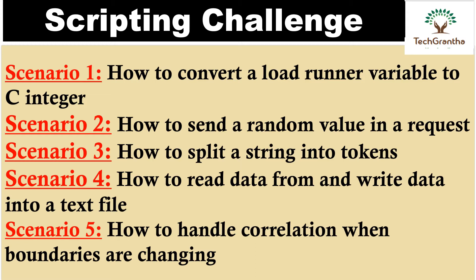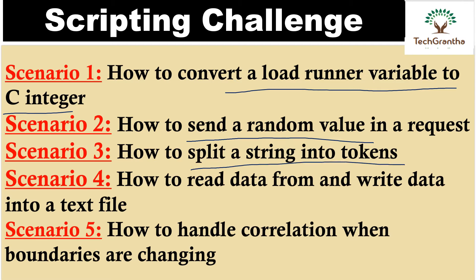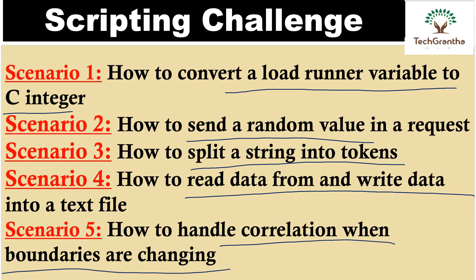The first challenge is how to convert a LoadRunner variable into a C integer. The second is how to send random values in your request. The third is how to split tokens. The fourth is how to read data from files and write to a text file. The fifth is when your dynamic value's left and right boundaries themselves change — how to handle that problem.